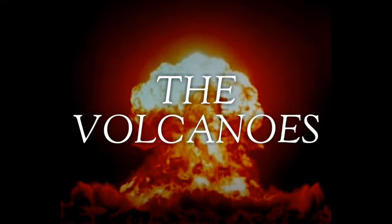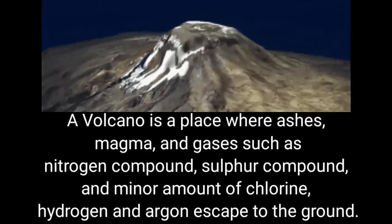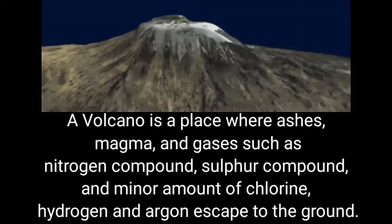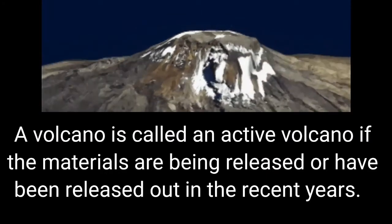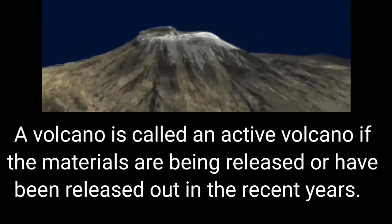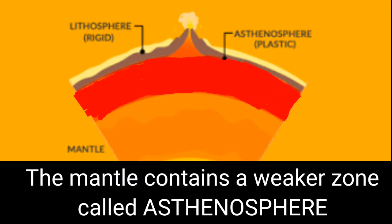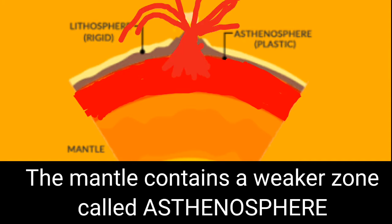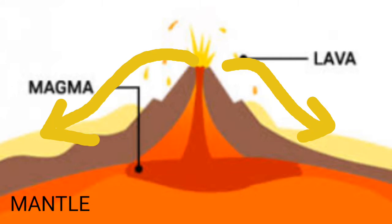That was all about the earthquake. Now we will move to our next topic, i.e. volcanoes. A volcano is a place from where ashes, magma and different gases like nitrogen compounds, sulphur compounds and some amount of chlorine, hydrogen and argon escape to the ground. Most of the volcanoes are extinct; only a few are active. A volcano is called active if materials are being released or have been released in recent years. The mantle portion of the earth contains a weaker zone called the asthenosphere. It is from this part that molten rock finds its way onto the surface. The material in the upper portion of the mantle is called magma. Once it starts moving towards the crust and reaches the surface, it is referred to as lava.